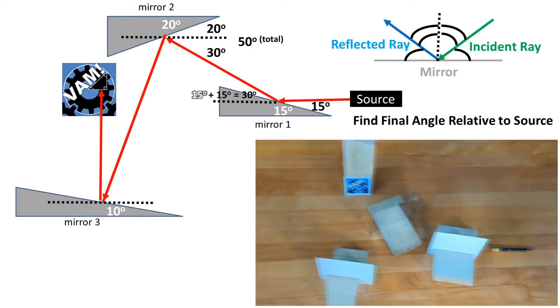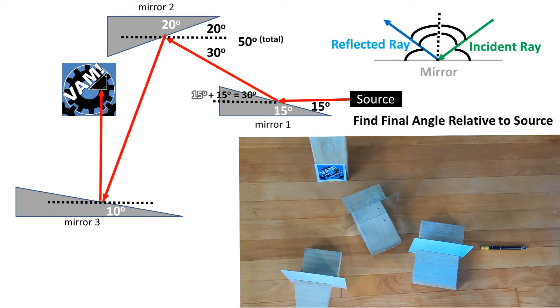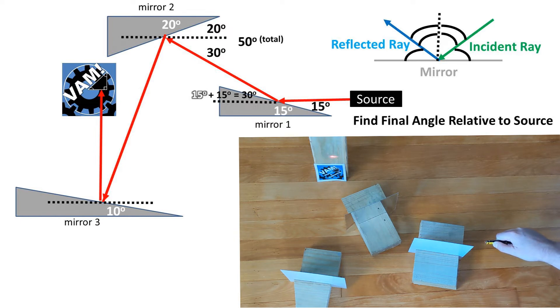Next, this beam bounces off of a second mirror, which is at a 20 degree angle relative to the source. Being we have an angle from the previous mirror of 30 degrees, we can add the 20 degrees of this mirror's slant to get an angle of the incident ray of 50 degrees from the second mirror's surface.